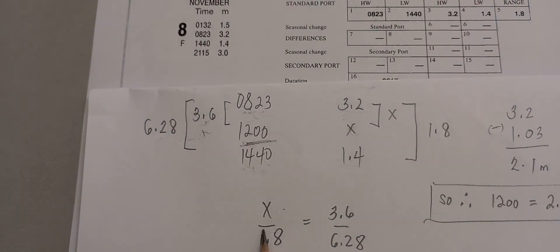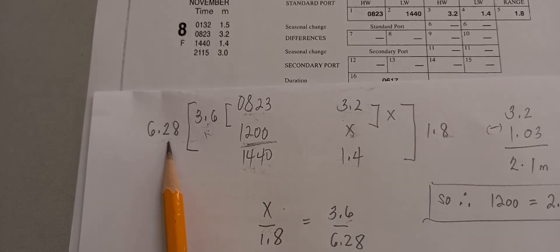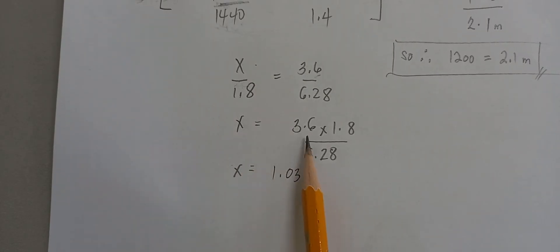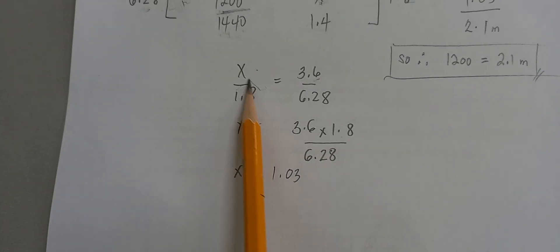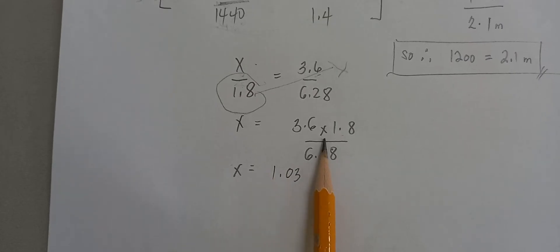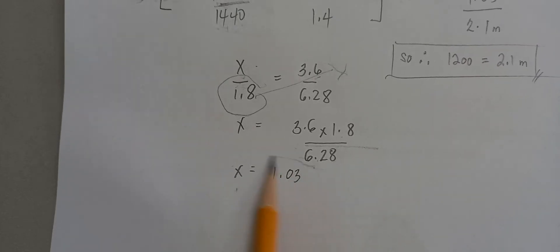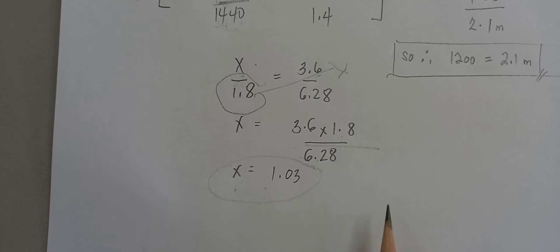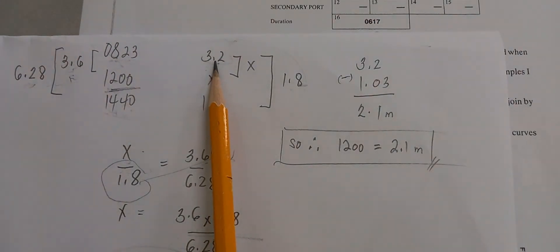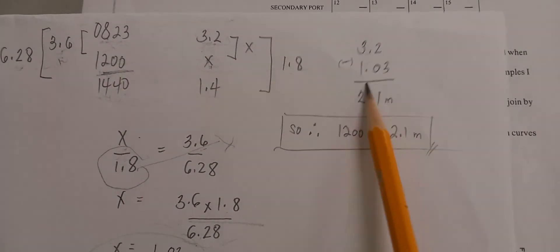To get the value of x, cross multiply: x over 1.8 equals 3.6 over 6.28. So x equals 3.6 multiplied by 1.8 divided by 6.28, which gives you 1.03. This is not yet the final value of 1200 — to get that, subtract 1.03 from 3.2, giving you 2.17, which rounds to 2.1.